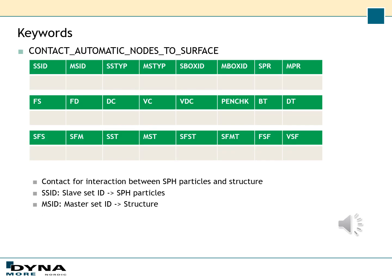For the interaction between SPH particles and the structure, you can use contact automatic nodes to surface. Here you will set the SPH particles as the slave part SSID, and the structure will then be the master ID MSID. As always with contacts, there are plenty of parameters that you can play around with, but I will not go into the details of all of them today.